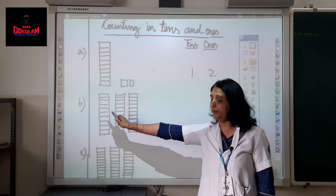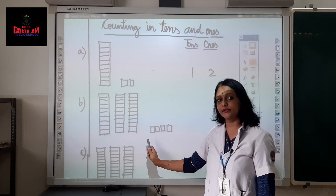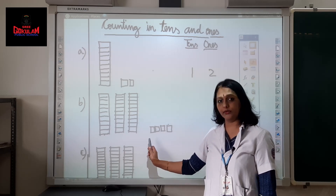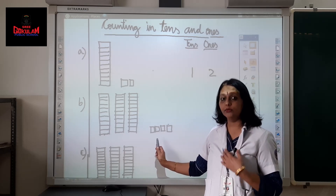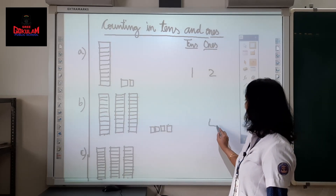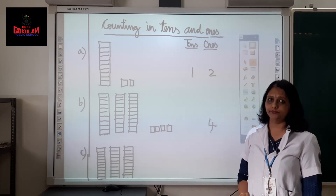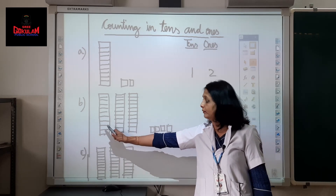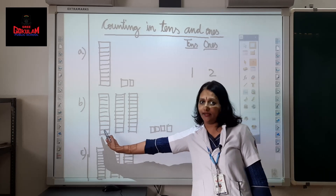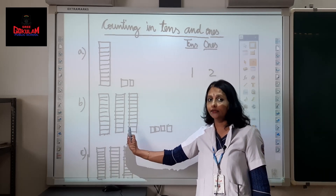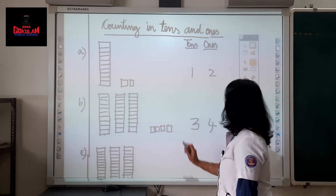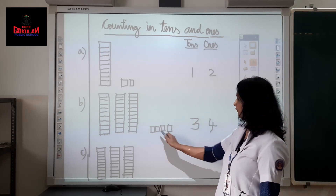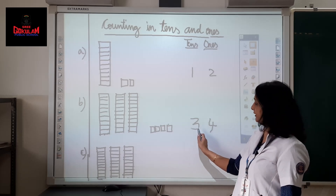Let us consider example B. The small boxes: 1, 2, 3, 4 — these small boxes represent the number 4, so we write 4 in the ones place. How many tens strips? 1, 2, 3 — 3 tens. We write 3 in the tens place. So this is number 34: 3 in tens place and 4 in ones place.